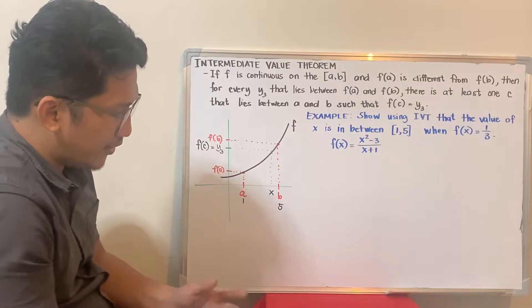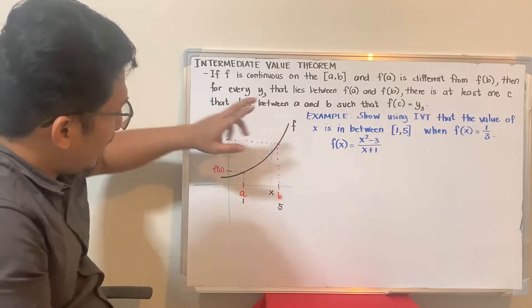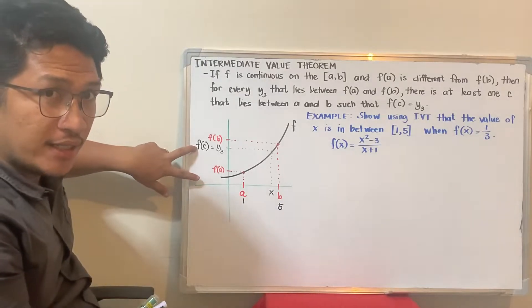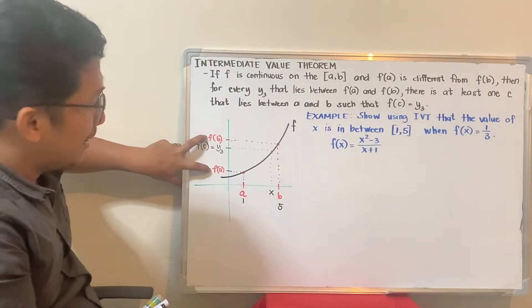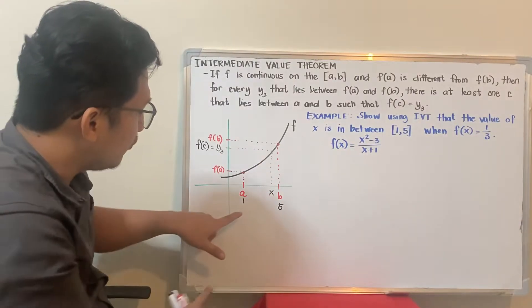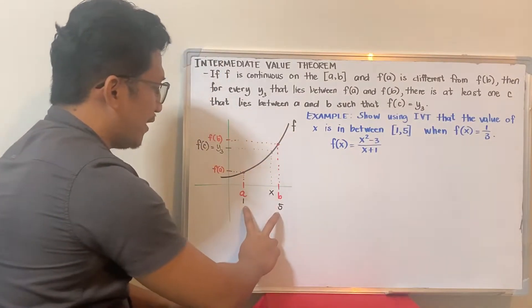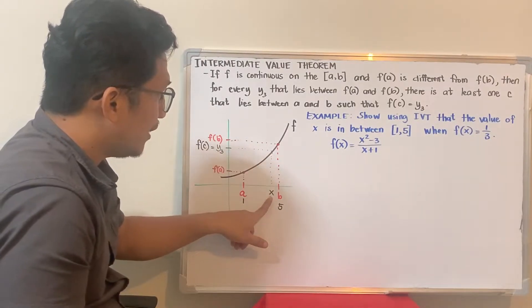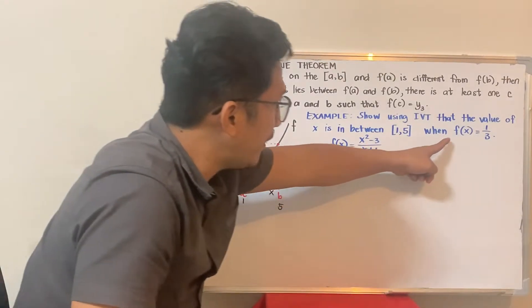According to intermediate value theorem, if the function is continuous, and the f of c value, or the y value, is in between f of a and f of b, then automatic the x-coordinate is in between the interval. Currently, we are given this interval of 1 and 5.